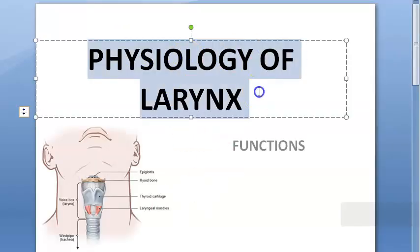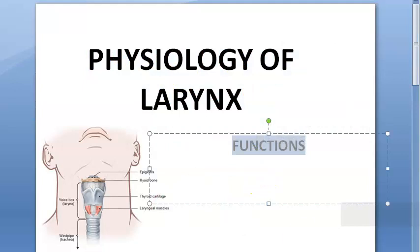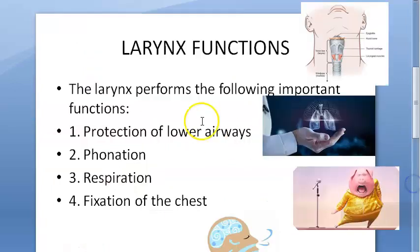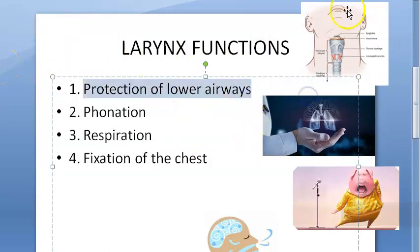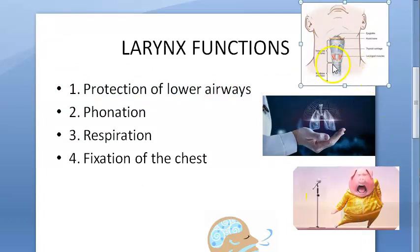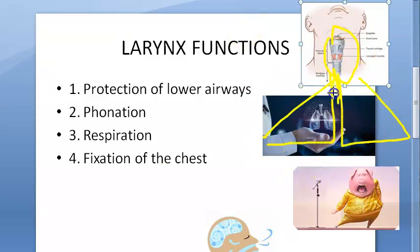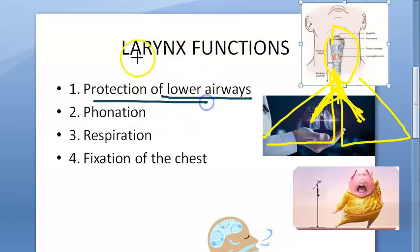Hello everyone. In this video, let us look at the physiology of the larynx — that means the functions of the larynx. According to the textbook, the important functions are: protection of lower airway, phonation, respiration, and fixation to the chest. The larynx is located here, and below it you have the trachea, bronchi, and lungs. The main function of the larynx is to protect the lower airways.